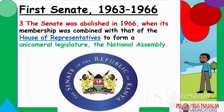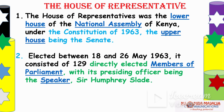The Senate was abolished in 1966 when its membership was combined with that of the House of Representatives to form a unicameral legislature — that's where the beginning of the problems started, because it became more dictatorial, with fewer rights and only one party: KANU. The House of Representatives was the lower house of the National Assembly under the 1963 Constitution. It consisted of 129 directly elected Members of Parliament, with Sir Humphrey Slade as the presiding Speaker.